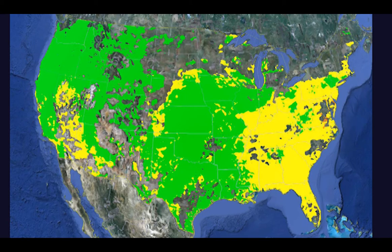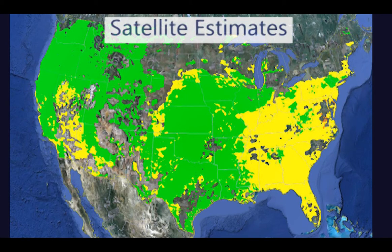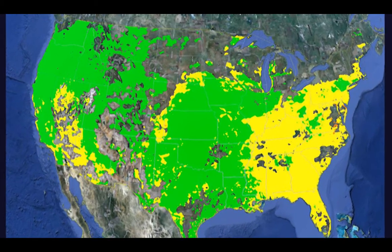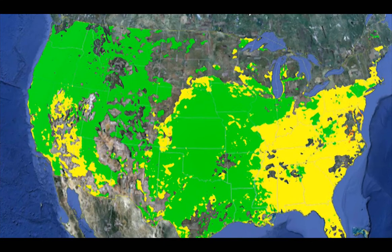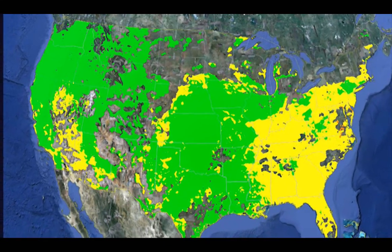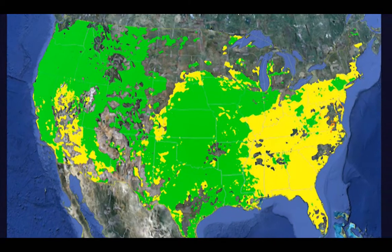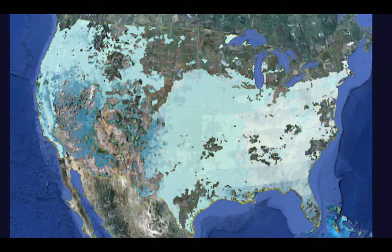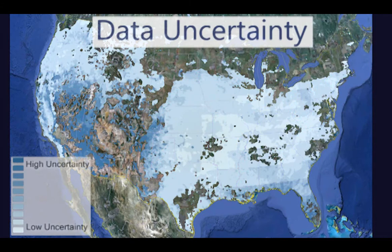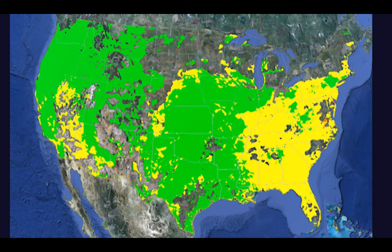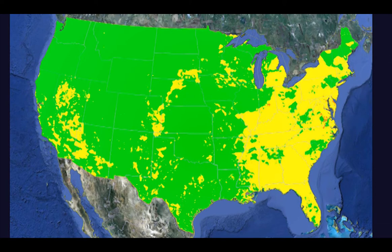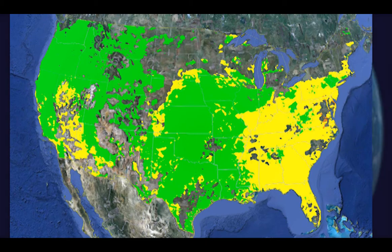By contrast, this is a map of satellite estimates of ground-level pollution for the same period. The blank areas indicate where satellite data was unavailable because of cloud cover. Even though the satellites can add valuable information, their contribution can be limited by data availability. The satellite estimates also have uncertainty associated with them. It's important to note that the ASDP only incorporates satellite information where satellite data exists. In all other locations, only ground observations influence the fused product.